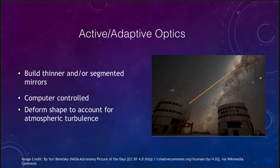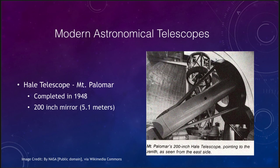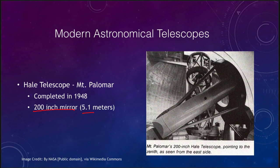Let's look at some modern astronomical telescopes. First is the Hale Telescope on Mount Palomar, one of the oldest and for a long time the largest telescope. It has a 200-inch mirror, or about a five-meter telescope. For a number of decades this was the largest telescope in existence, and it is still in use today.